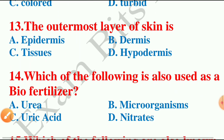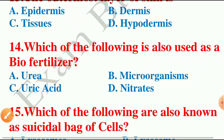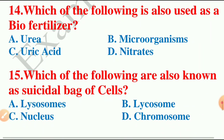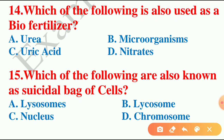Moving on to the next question: which of the following is also called a biofertilizer? The options are urea, microorganisms, uric acid, or nitrates. The answer is option B — microorganisms. Biofertilizer is a fertilizer which contains living microorganisms in it, so option B is the correct answer.